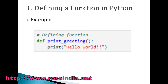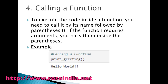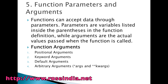For a defining-a-function example, we define 'def print_greeting():', with 'print("Hello World")' inside the indented area. To execute the code inside a function, you call it by its name followed by parentheses. If the function requires arguments, you pass them inside the parentheses. Functions can accept data through parameters — parameters are variables listed inside the parentheses in the function definition, while arguments are the actual values passed when the function is called.